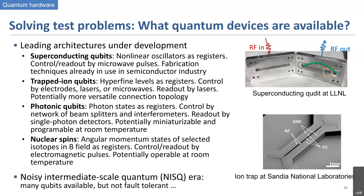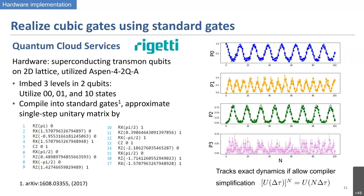All these architectures share a common feature: they are in the noisy intermediate-scale quantum (NISQ) era. You can build many qubits, but it's hard to eliminate noise and non-trivial to do error correction. Basically you have many qubits that are not fault-tolerant — if you want your quantum computer to do one thing, it may end up doing something slightly different. That is the stage we currently live in.